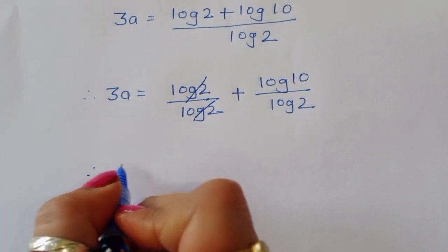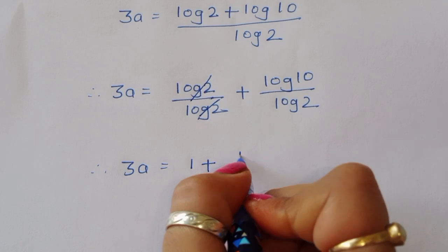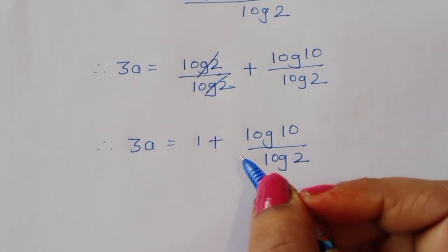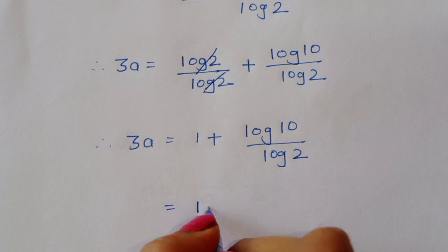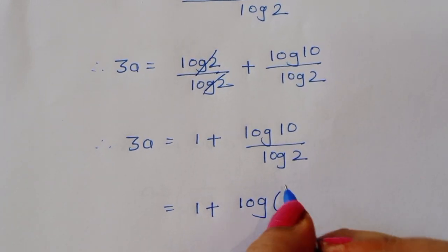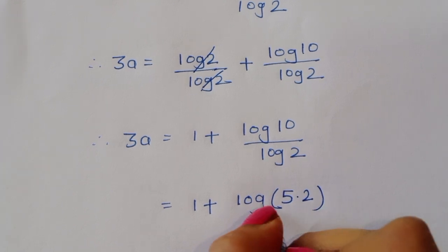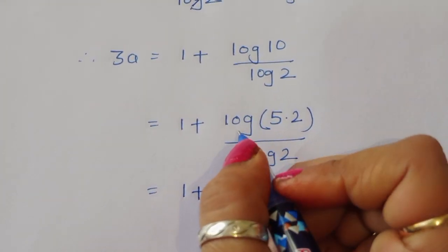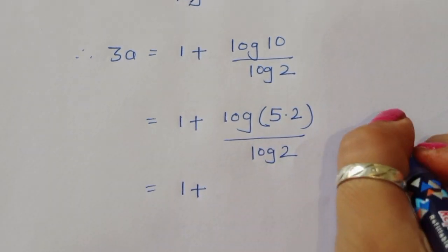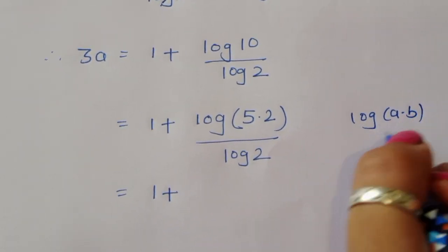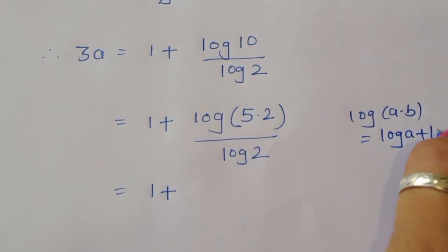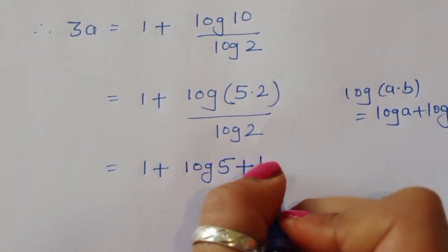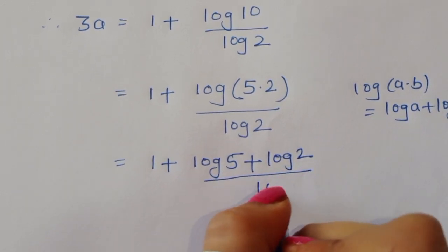Log of 2 over log of 2 cancels, therefore 3a is equal to 1 plus log of 10 divided by log of 2. Now log of 10 we can write as log of 5 times 2. Using the formula log of a times b equals log of a plus log of b, we get 1 plus log of 5 plus log of 2 divided by log of 2.